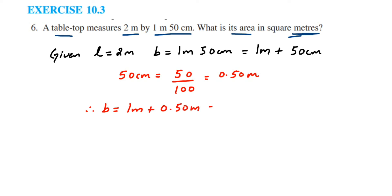We're going to find out the area of the table-top. Area of table-top equals—now it is in the shape of a rectangle, so the formula will be length into breadth. Length is 2 meter multiplied by breadth is 1.50, so 2 × 1.5 = 3.